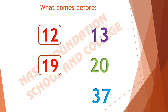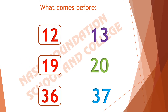Here we have 37. What comes before 37? Students, subtract 1 from 37 and tell me what we will get. We will get 36. If we subtract 1 from 37 we will get 36. What comes before 37? It comes 36.